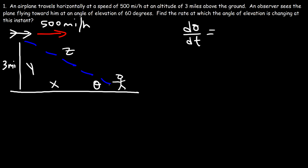Now what else do we know? So we have the value of y. Y is equal to 3 miles. We don't know the value of x, but we do know the rate at which x is changing. So is x increasing or decreasing? Notice that as the plane travels towards the person, x is decreasing. Therefore, dx/dt is negative 500 miles per hour.